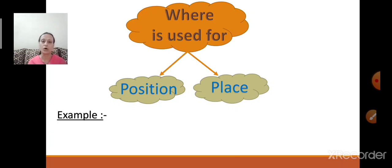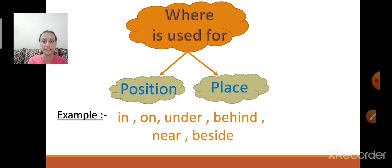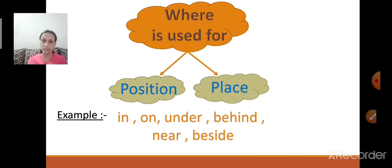Now, examples of position words are: in — if I keep the pencil in the box, it is 'in'. Now 'on', 'under', then it is 'behind' — this is my piece, so this is behind. It is 'near'. It is 'beside'. So these are the examples of position words.